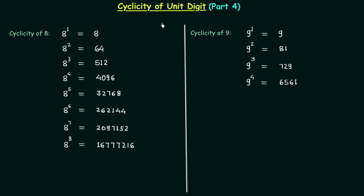Hello everyone, welcome to this lecture which is the 4th part of cyclicity of unit digit. We have already completed 3 parts of this topic in which we obtained the cyclicity from 1 to 7. So we already know all the basics of cyclicity, and it will not be difficult for us to find out cyclicity of 8 and cyclicity of 9. This is the last part of this topic.